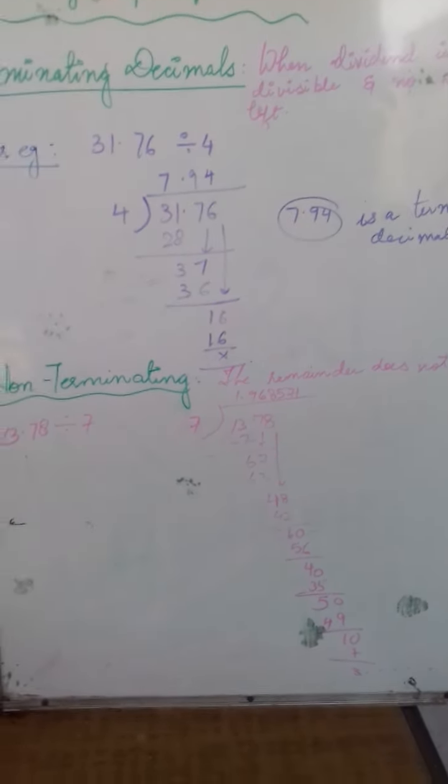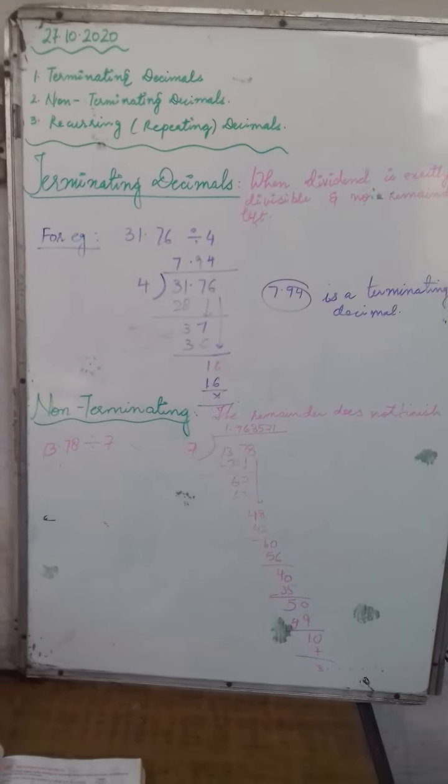So, this is an example of non-terminating decimal. I hope this much is clear to you. Please try to understand it.